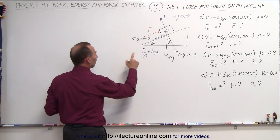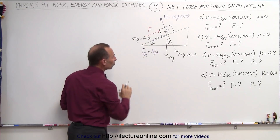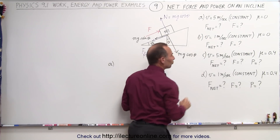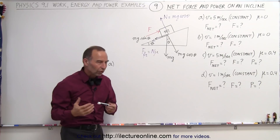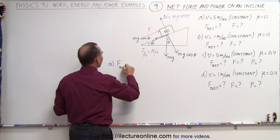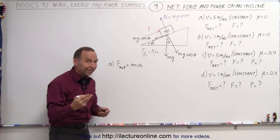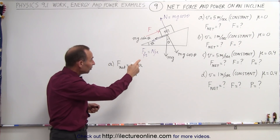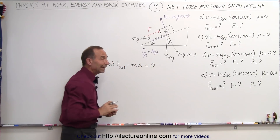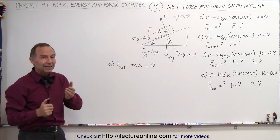Let's start with A. We have a constant velocity as the block is being pushed up with no friction, and we're asked to find the net force. We always use Newton's second law: F net equals mass times acceleration. But since the velocity is constant, the acceleration will be zero, so therefore the net force must be zero.